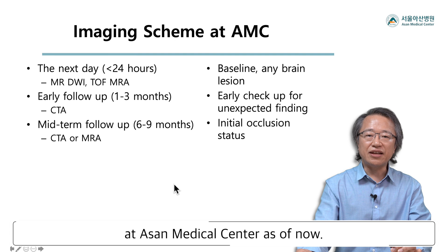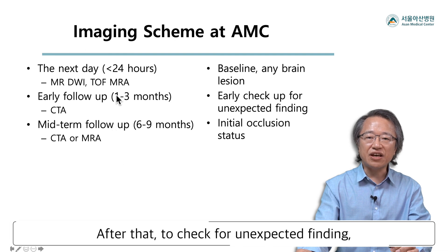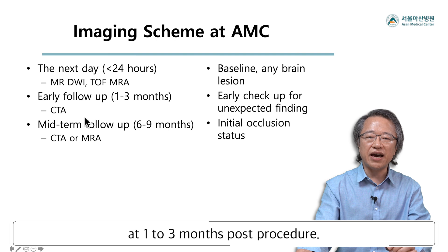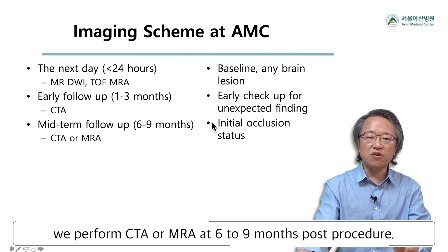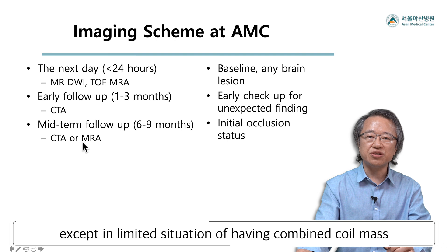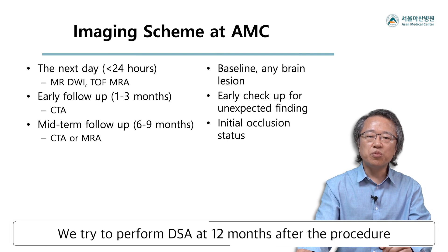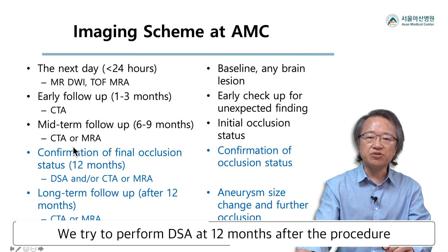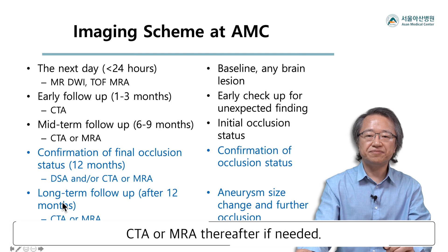This is our imaging scheme at Asan Medical Center as of now. We obtain DWI and TOF MRA the next day. After that, to check for unexpected findings, we perform early CTA follow-up at 1 to 3 months post-procedure. Then, to see the initial occlusion status, we perform CTA or MRA at 6 to 9 months post-procedure. We rely heavily on CTA except in limited situations of having combined coil mass or history of iodine contrast allergy. We try to perform DSA at 12 months after the procedure for confirmation of occlusion status, with CTA or MRA thereafter if needed.